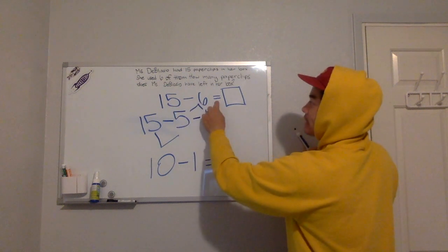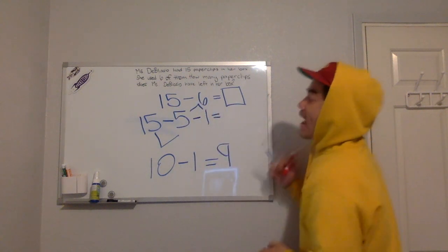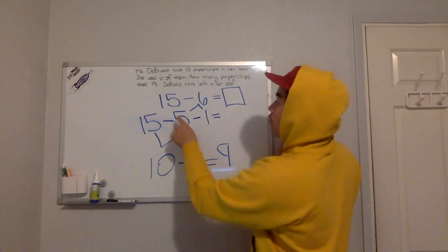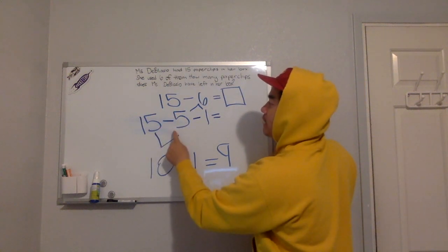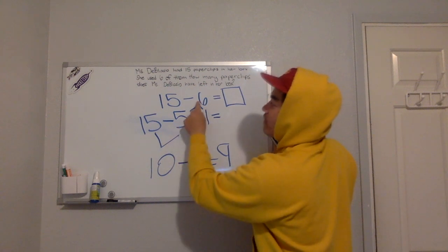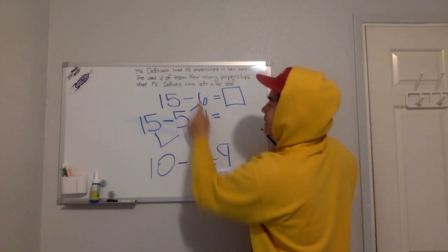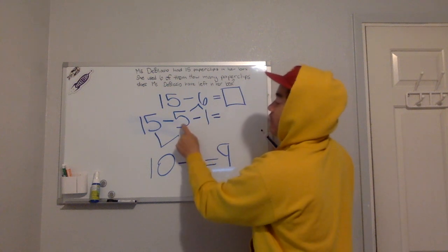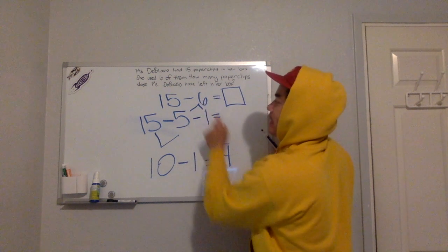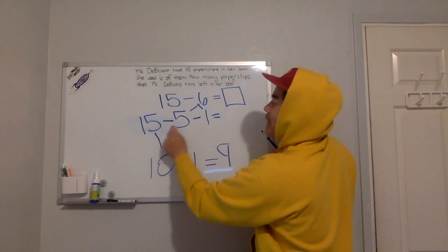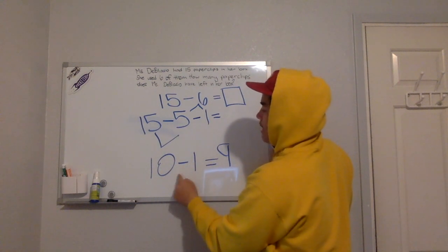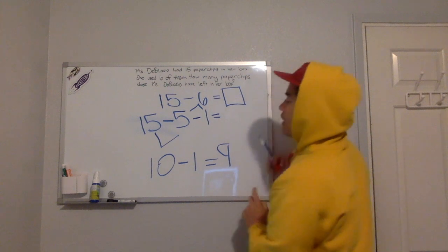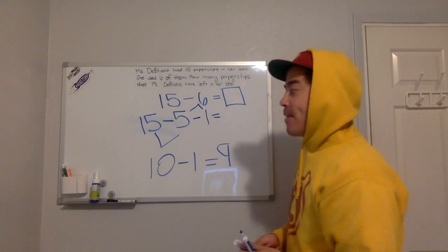So 15 minus 6 equals blank. I have to make a friendly number. So 15 minus 5 is going to help me make my friendly number. And I took the 5 away from the 6. So if I took away 5 from the 6, I have 1 left. So the 5 and the 1 makes that 6. So 15 minus 5 equals 10. The minus 1 goes down. 10 minus 1 equals 9. So that is how you do it, by making 10.